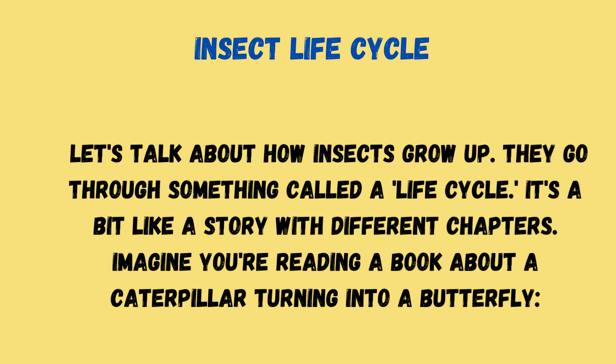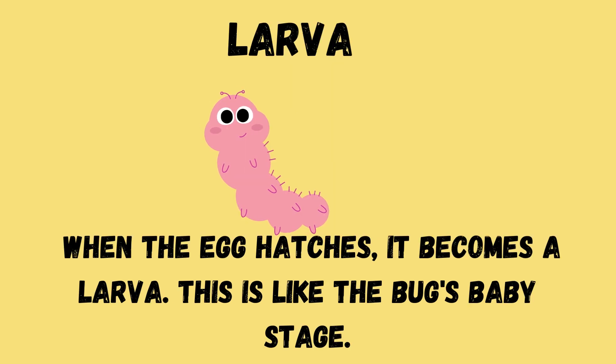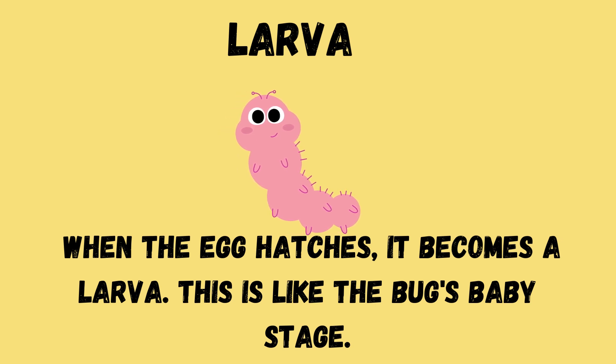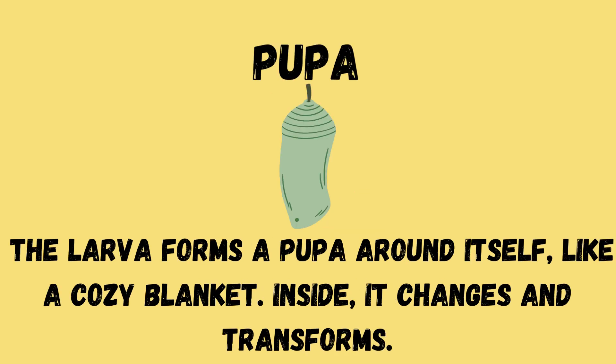Insects start as teeny tiny eggs. When the egg hatches, it becomes a larva. This is like the bug's baby stage. The next stage is the pupa — the larva forms a pupa around itself, like a cozy blanket.